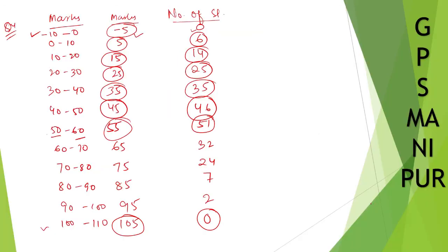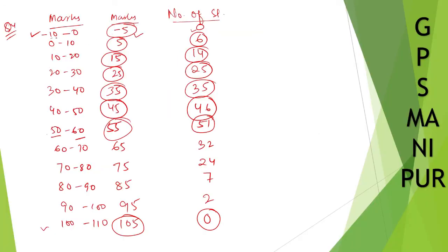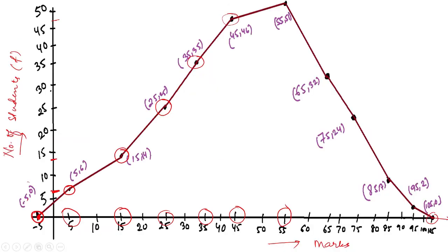But one thing you need to keep in mind is you don't forget to put this one class and this end one class. This is the extra class which you are going to put. That's all. This is how your polygon looks like. That's all. Thank you so much. We will meet in the next video.